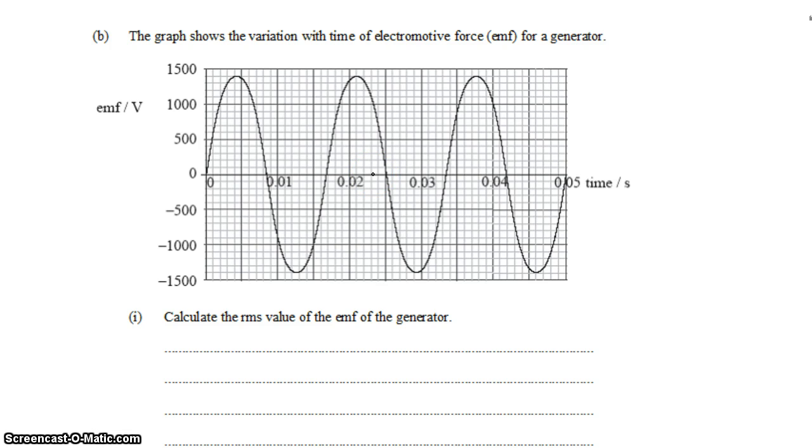So a straight average is not helpful. So instead, what the RMS value is a measure of is an average of the magnitude of the EMF. So we take all these negative cycles and flip them, and then take the average of what remains.